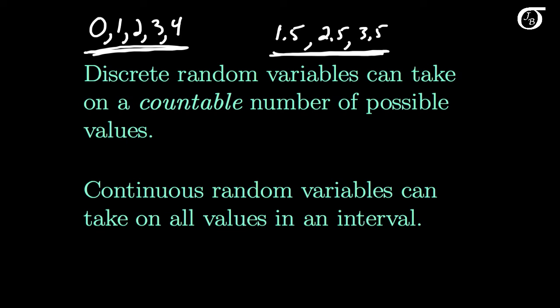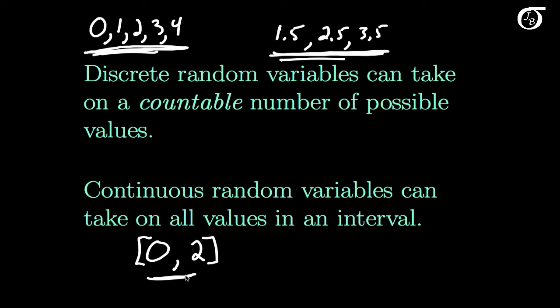Continuous random variables, on the other hand, can take on all values in an interval. Suppose we had some container with a maximum capacity of 2 liters that we put outside and checked in a couple of weeks. The amount of water in that container is a random variable that can take on any value between 0 and 2 liters — not just 0, 1, and 2, but anything in this interval. So there is a continuum, an infinity of possible values, such as 0, 0.325986, or 2 liters.